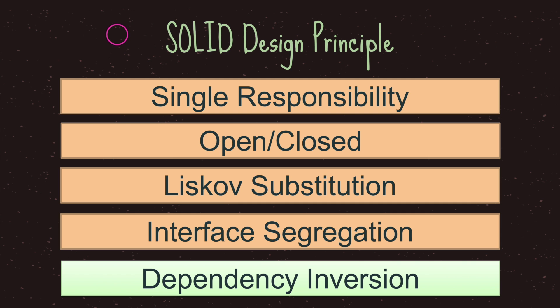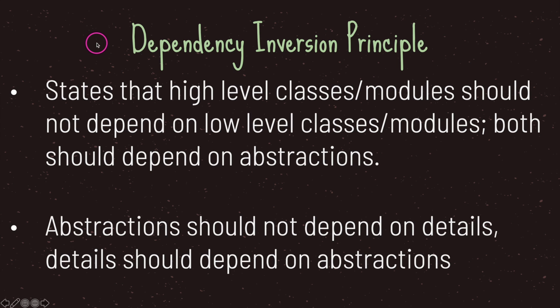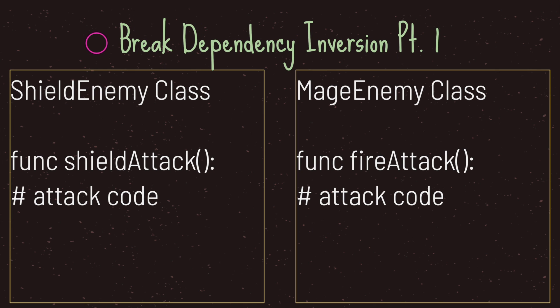Hello and welcome to another episode in the Godot Basics tutorial series. In this episode we will be looking at the dependency inversion principle, not to be confused with dependency injection. The dependency inversion principle states that high level classes should not depend on low level classes, both should depend on abstractions, and abstractions should not depend on details — details should depend on abstractions. We have pseudocode and we're going to look at a way to break the dependency inversion principle.